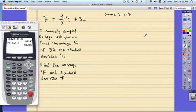So I randomly selected 50 days last year and found an average degree Celsius of 32 and a standard deviation of degree 12. These are in Celsius. Find the average in Fahrenheit and standard deviation of Fahrenheit. So the rule is if you're adding or subtracting, only the mean. I just showed you that not the standard deviation, not SD.